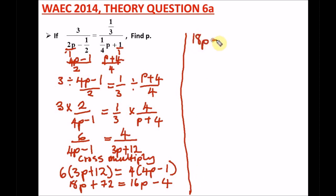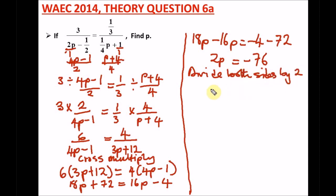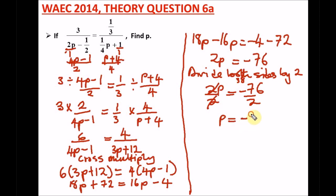Now we collect like terms. Bringing 16P to the left side gives us minus 16P, and taking positive 72 to the right side gives us minus 72. So 18P minus 16P is 2P, equal to minus four minus 72, which is minus 76. We divide both sides by two: 2P over 2 equals minus 76 over 2. The twos cancel out, and 76 divided by 2 is 38. So P equals minus 38.